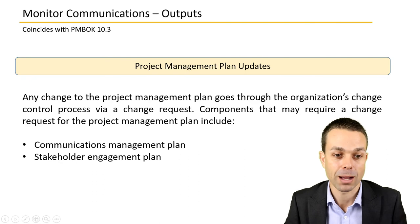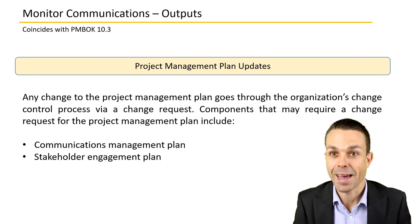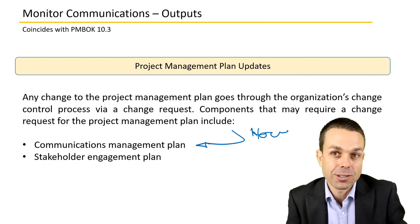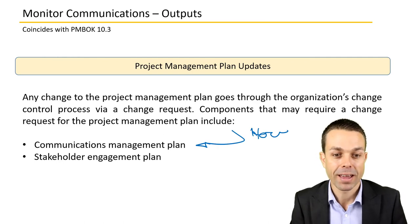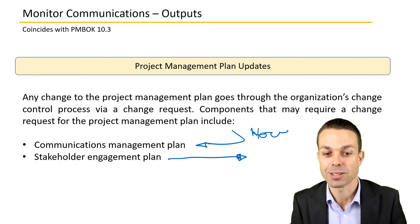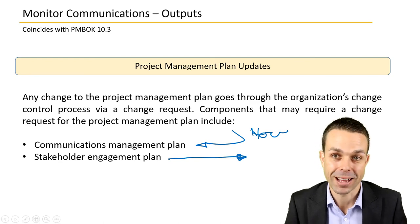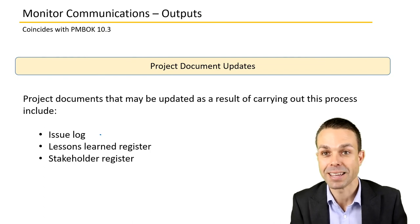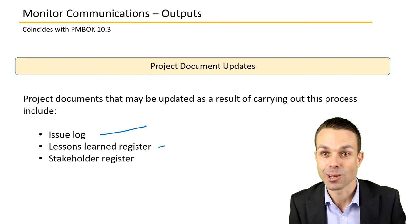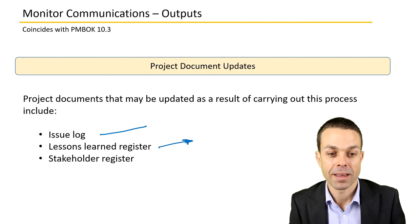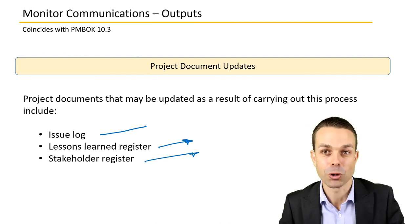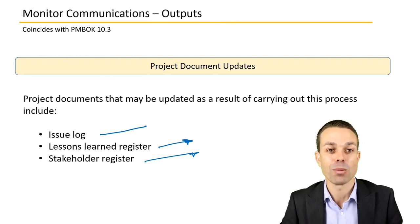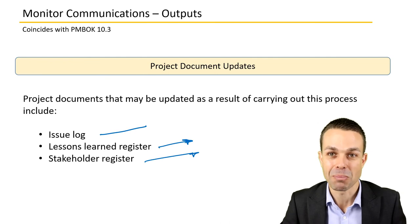Project management plan updates include the communications management plan — how we decided we would communicate with people — and the stakeholder engagement plan, if we need to change how we're engaging stakeholders. Project documents updates may include any issues found, lessons learned along the way, and the stakeholder register if people come or go as our project evolves. Those are the details for monitoring communications as part of the project management body of knowledge.